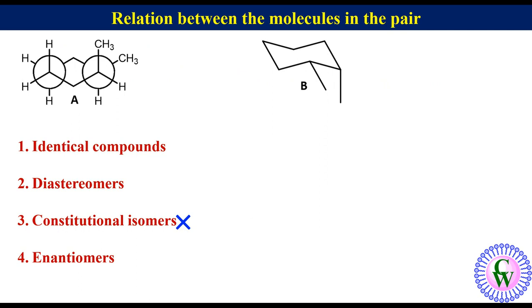Both have cis dimethyl groups. So, there is not any possibility for them to be diastereomers.